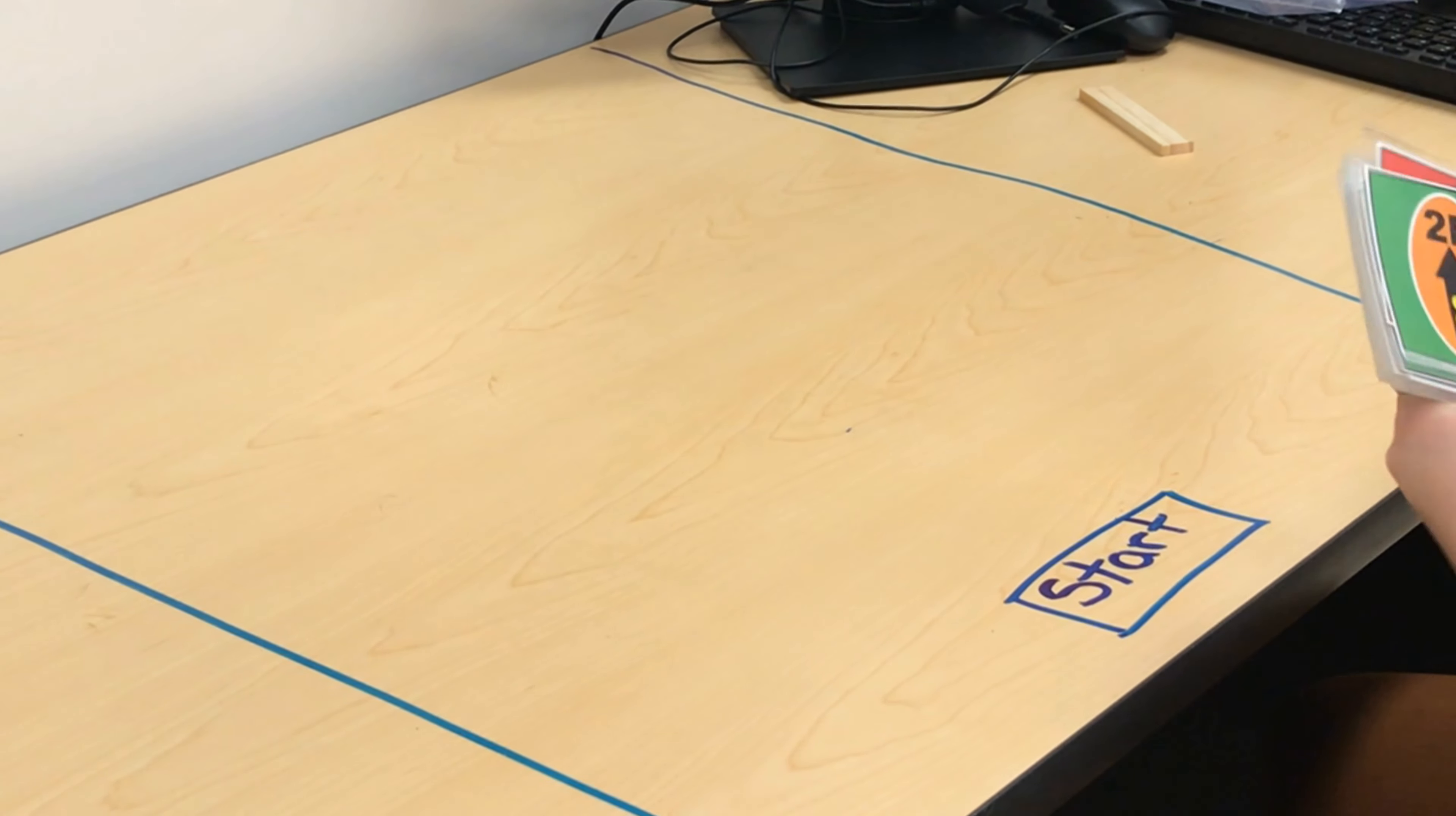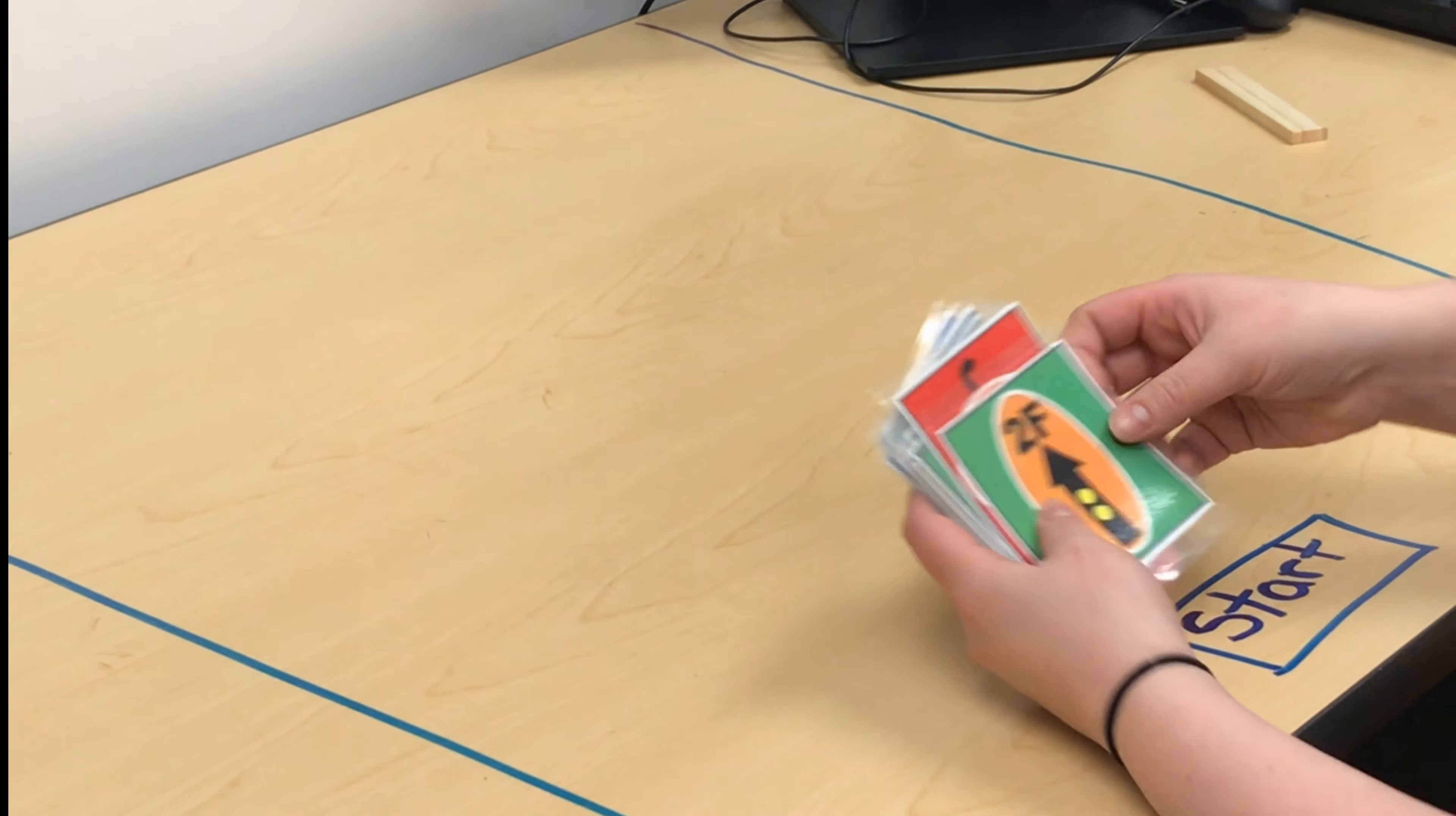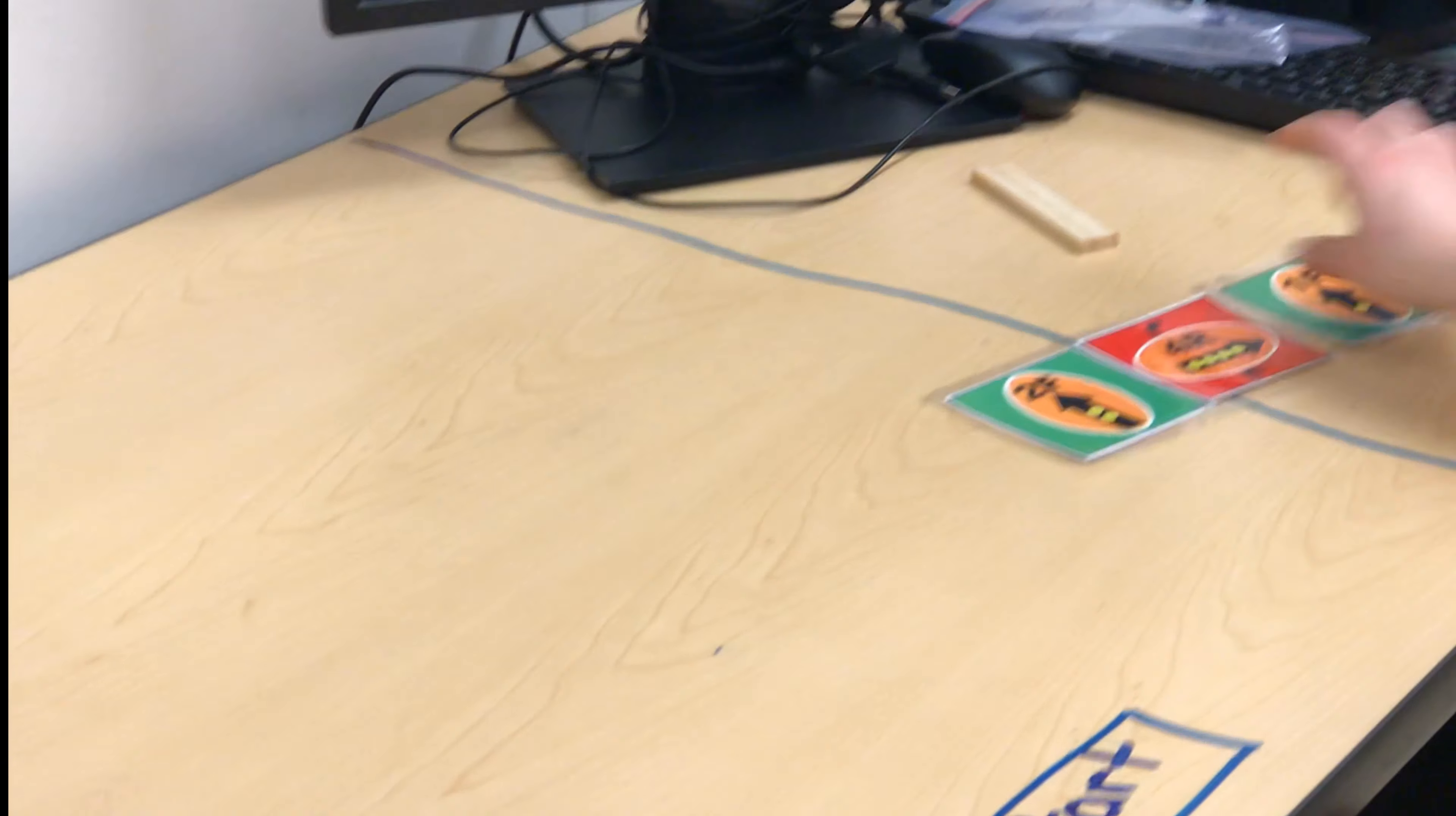Alright, so we went over what our cards meant, what the signs meant. Now we're going to talk about what you're going to do with them. You are going to lay three cards out to the side. We're going to read our code from left to right, just like we read.